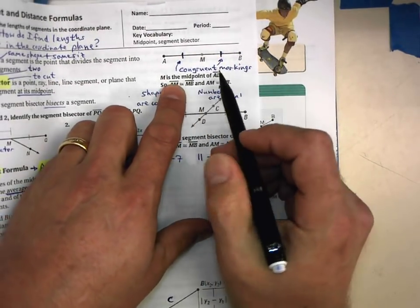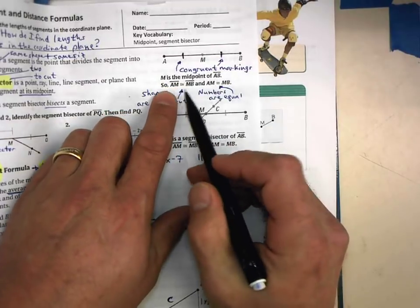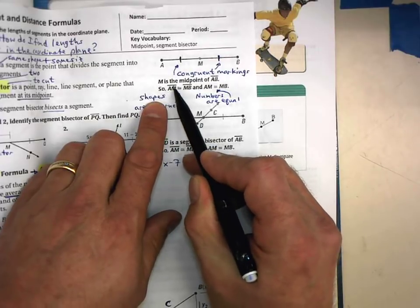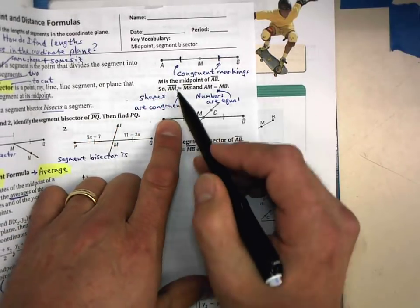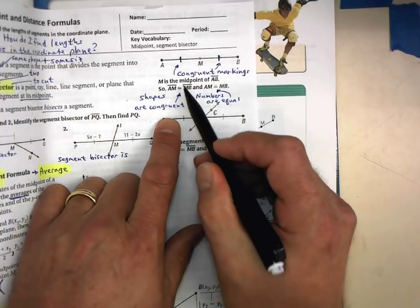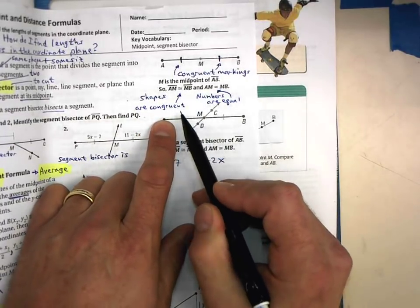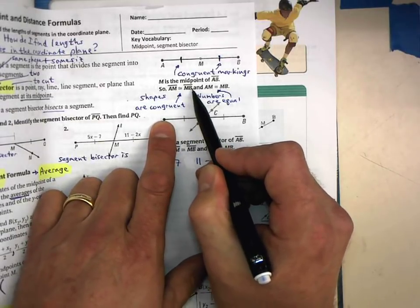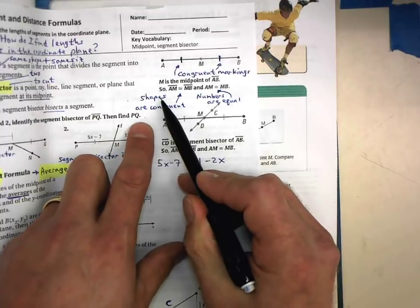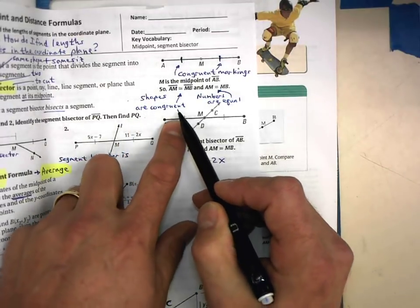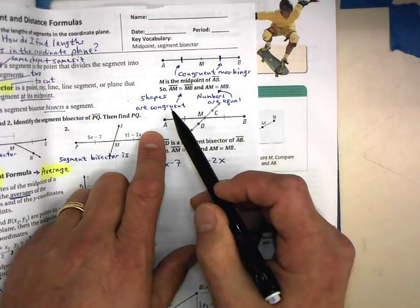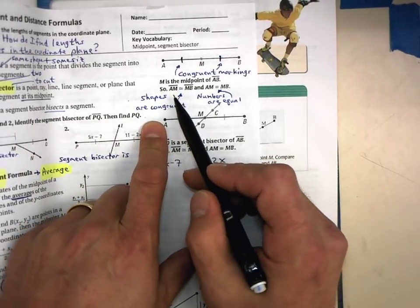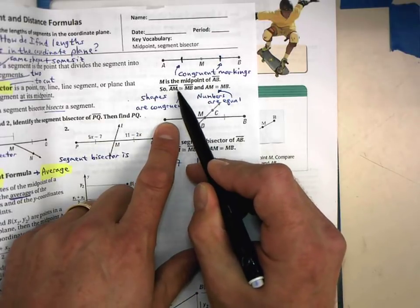So those are congruent markings saying that segment AM is congruent with segment MB. Or another way of saying it, or what that means is that the length of AM is equal to the length of MB. And you have that written there in your notes. So M is the midpoint of segment AB. So therefore, segment AM, so this is a shape, segment AM, is, and look at that, that's an equal sign with a squiggly on top of it. What does that mean? It means that's the congruence symbol. So segment AM is congruent to segment MB. So please write in your notes, shapes are congruent.